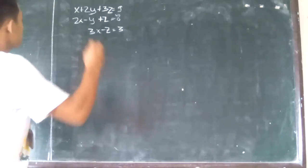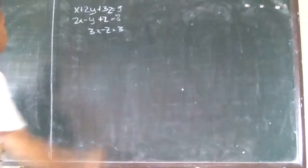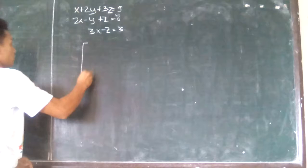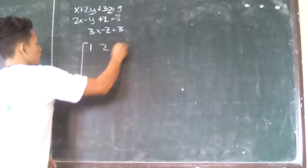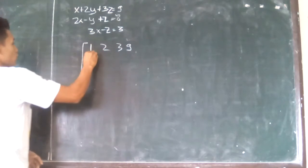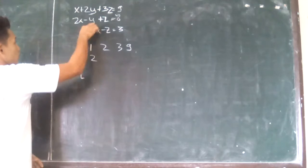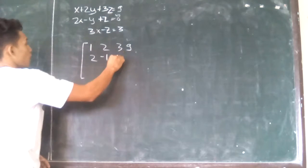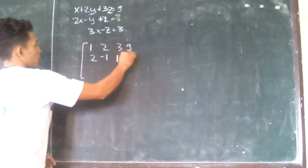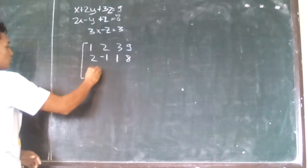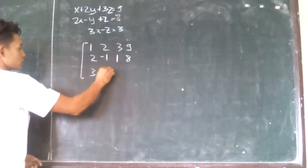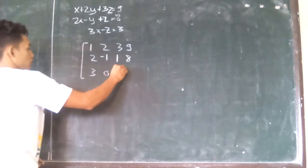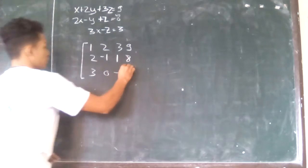First, we make an augmented matrix. The first row is 1, 2, 3, and 9. Then 2, negative 1, 1, 8. For the third row, we don't have a Y coefficient, so Y is 0. Then negative 1 and 3.